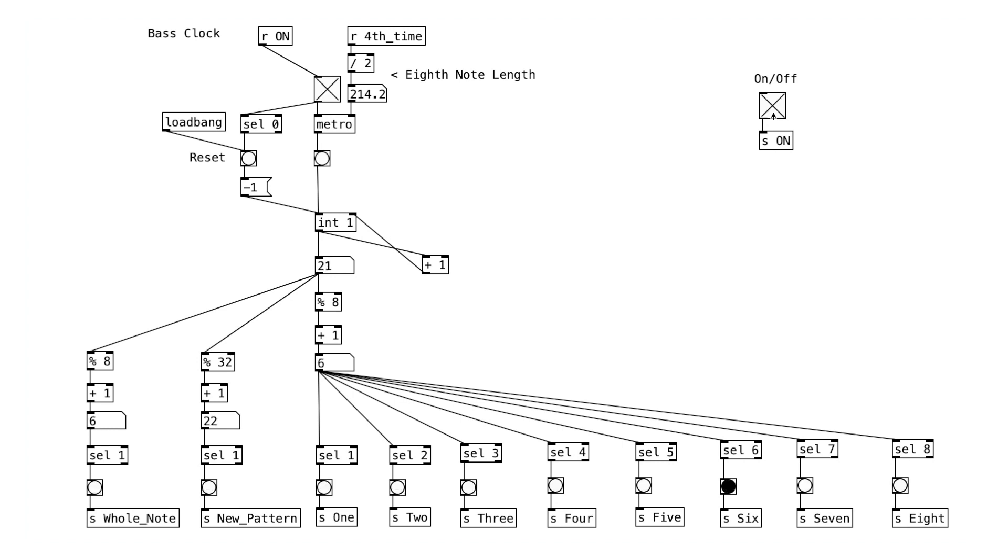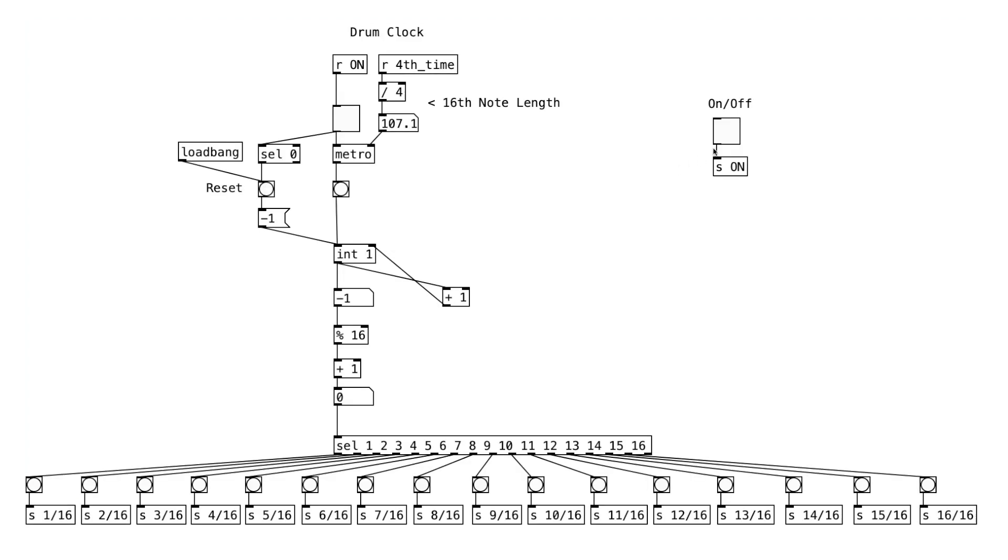And here's the clock that we have been using for the past few tutorials. This one is for the 8th note bass sequencer. This button will bang every four measures to generate new bass and drum patterns, and this button will bang every one measure to trigger a crash cymbal sample. And here we have a 16th note drum clock.